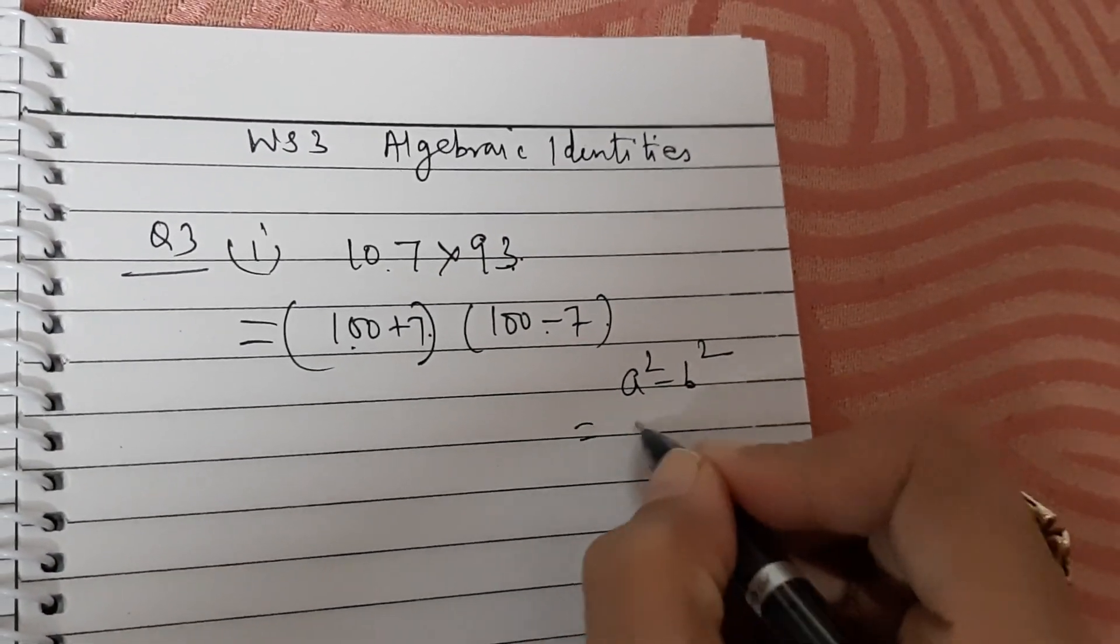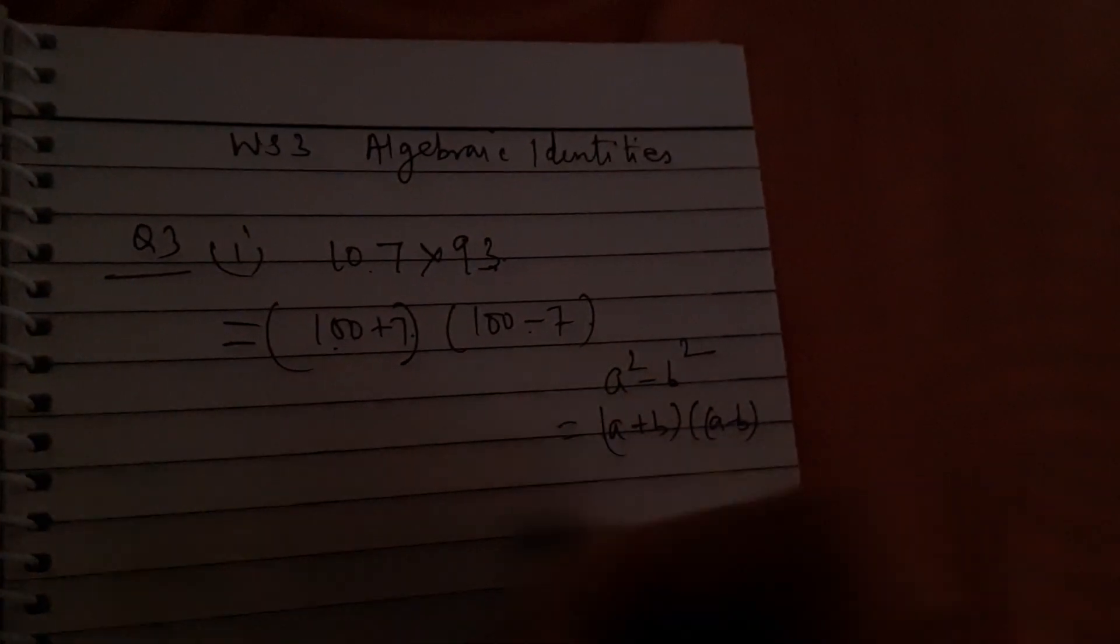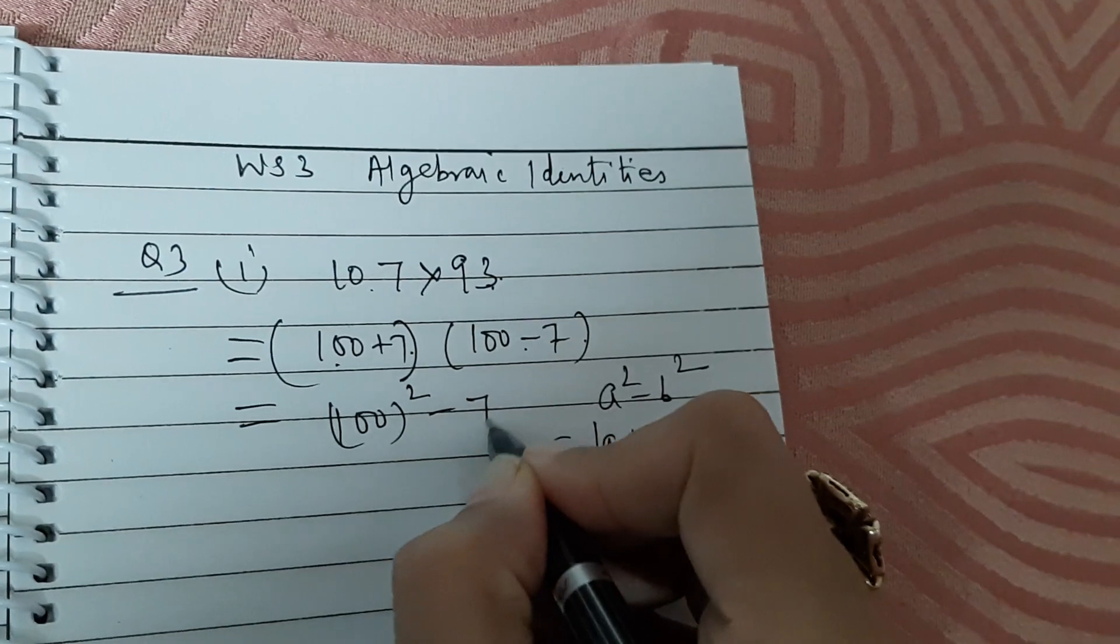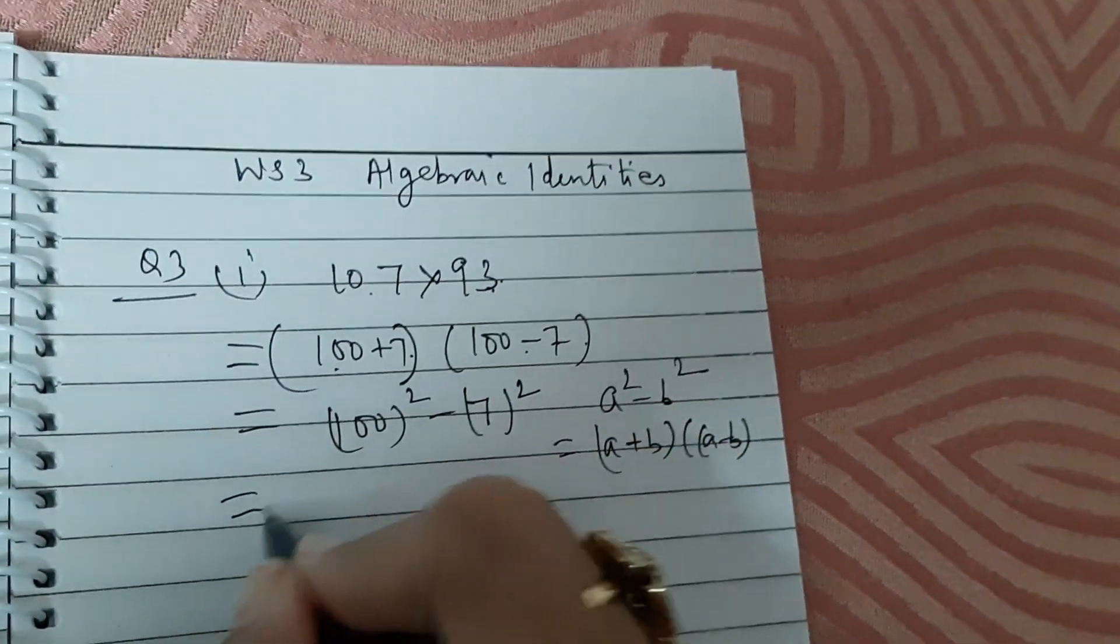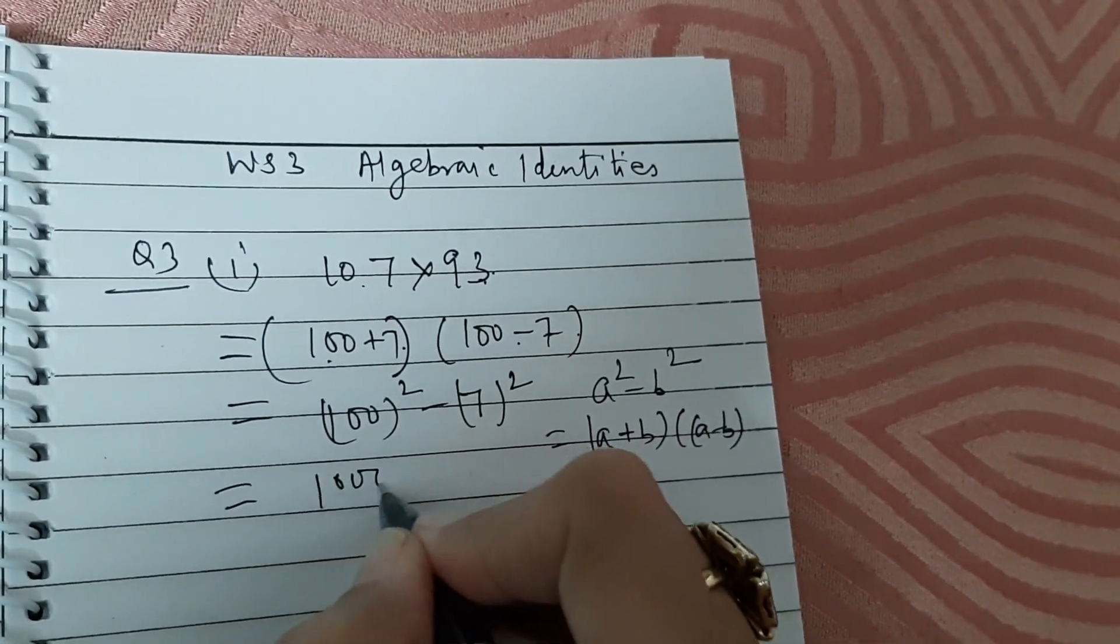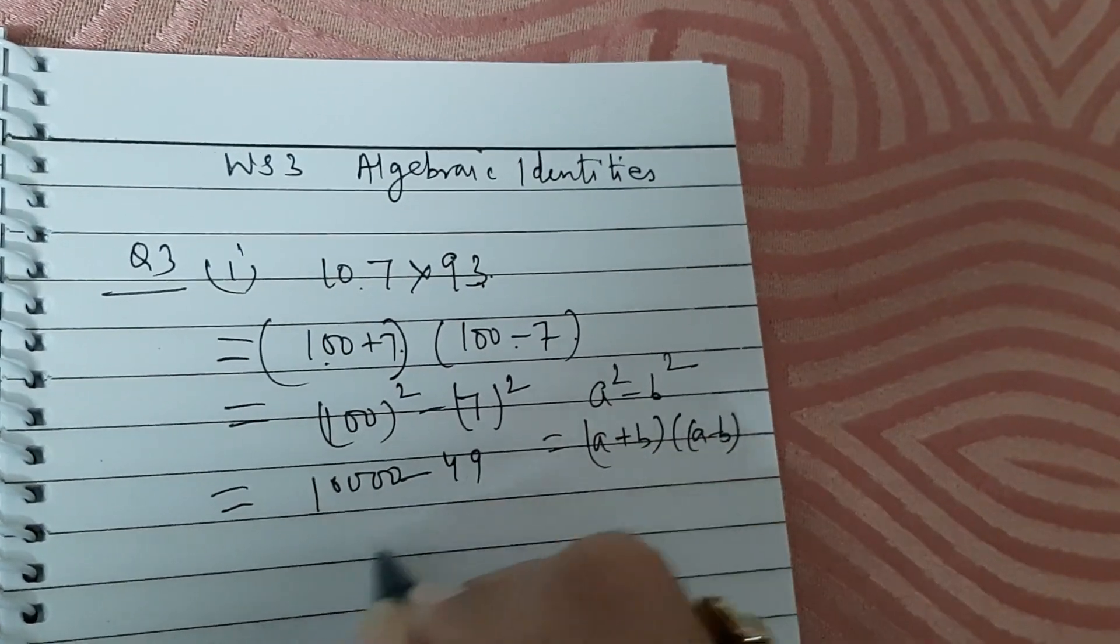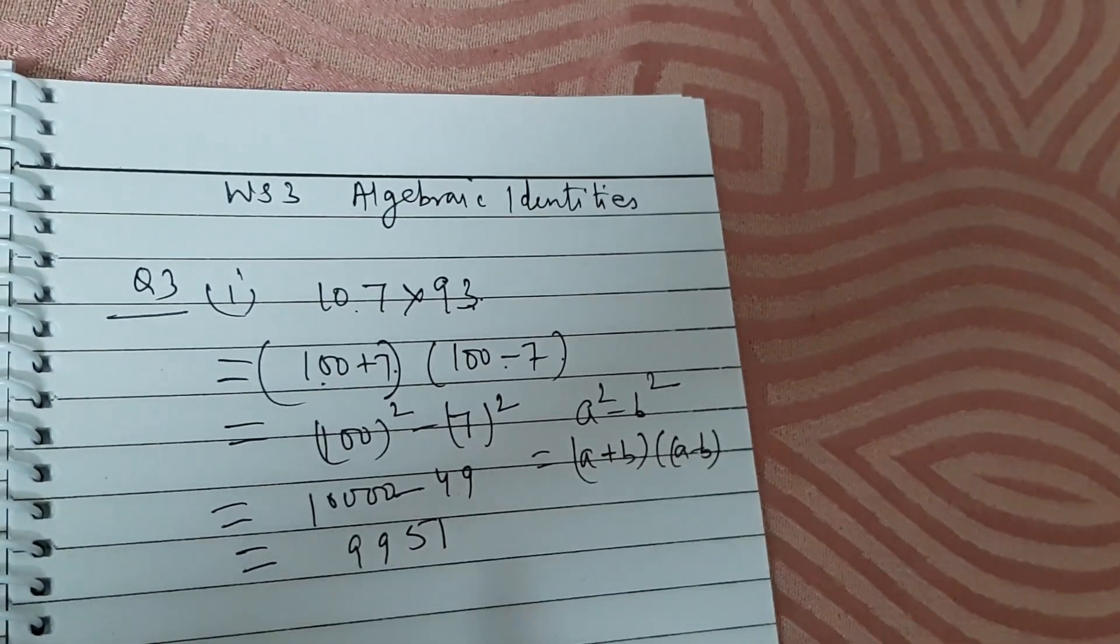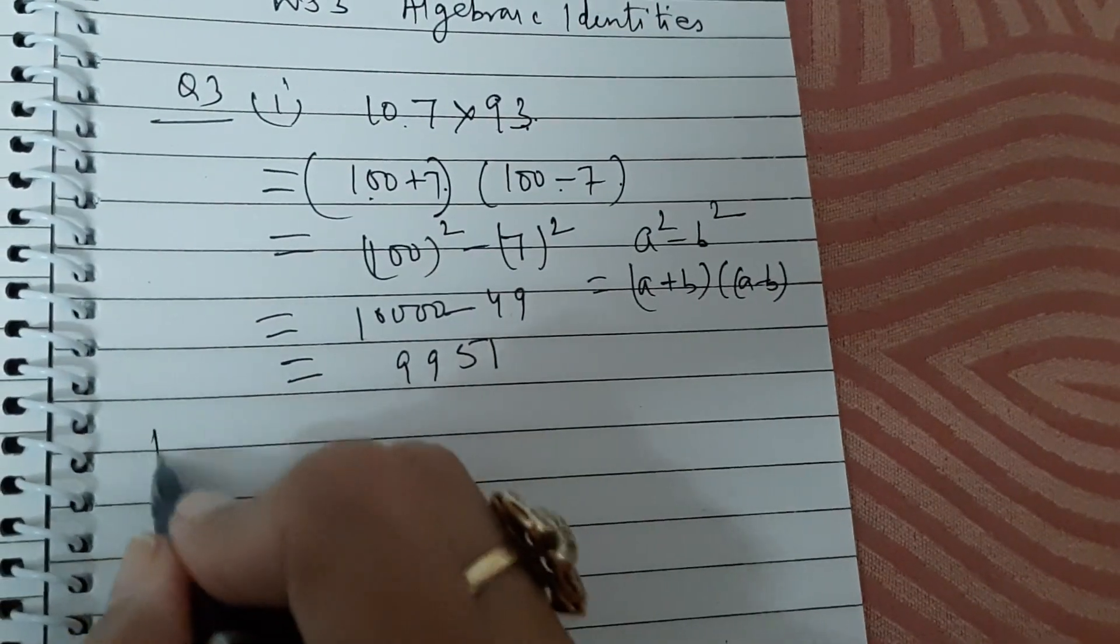This is equal to 100² minus 7², which equals 10,000 minus 49, which is 9,951. So now you tell me quickly how will you split 211 and 189?